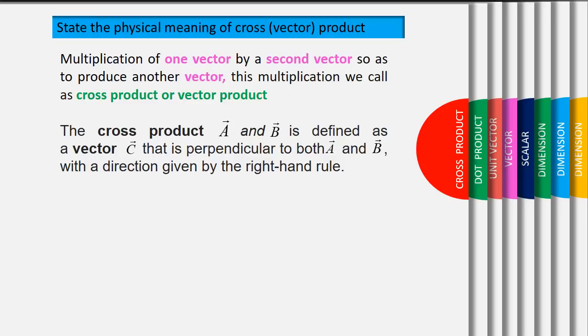The cross product A and B is defined as a vector C that is perpendicular to both A and B, with the direction given by the right-hand rule. Vector a cross vector b equivalent to vector c.